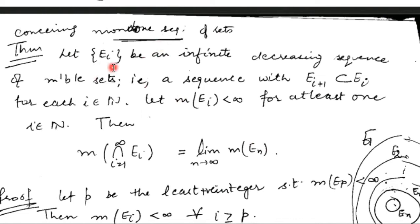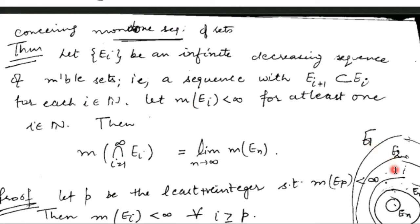The next theorem is related to the monotone sequence behavior of sets. We consider {Eᵢ} to be an infinite decreasing sequence of measurable sets, meaning Eᵢ₊₁ is contained in Eᵢ. The condition given is that for at least one index i, the set has finite measure. It may be that E₁ and E₂ have infinite measure, but E₃ has finite measure.